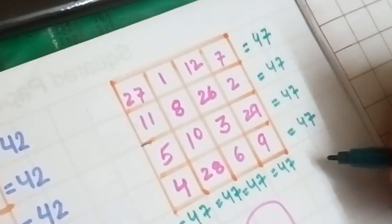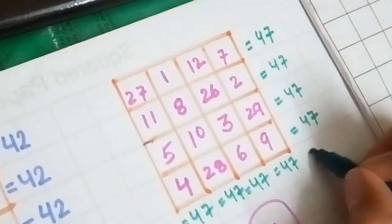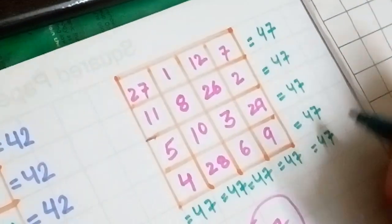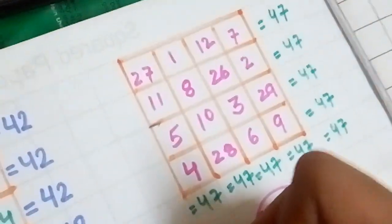Now if you add up the numbers diagonally, 27, 8, 3, and 9, you get 47. And if you choose the other diagonal, meaning 7, 26, 10, and 4, you would again get 47.